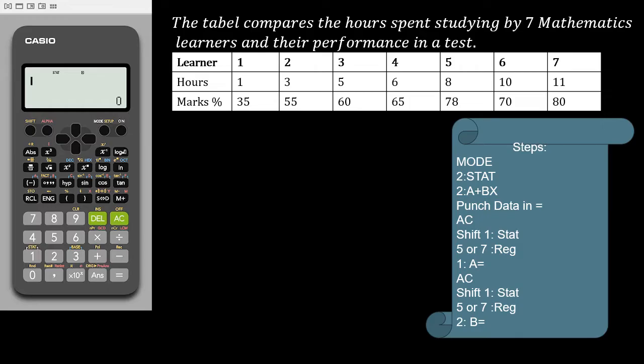We will put our calculator in stats mode. We will start by pressing mode, number 2, stat, and then number 2, a plus bx. Then we will enter the data. The first column: 1 equals, 3 equals, 5 equals, 6 equals, 8 equals, 10 equals, 11 equals.